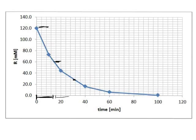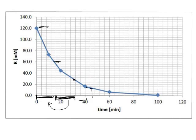To go from 60 to 30 — again half of it — we have a similar time span, and if you look at it, that time span is the same as the previous one. And to go from 30 down to 15, we again have a very similar time span. So the time span to go from any concentration x down to x/2 is always the same.